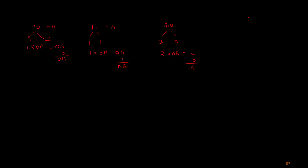Similarly, for 25 we separate it into 2 and 5. 2 multiplied by 0A gives 14 again. Then 5 is added to 14, giving 19. So 25 in BCD corresponds to 19 in hexadecimal.